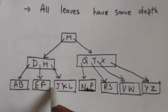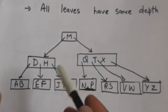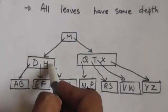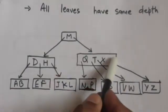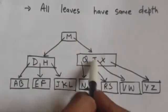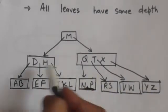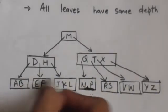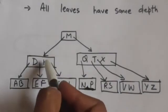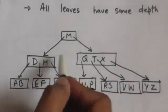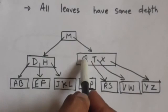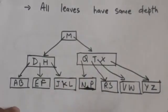Consider this B tree — all leaves have the same depth. This node of the B tree has two keys, so it has three children. And this node of the B tree has three keys, therefore it has four children. You can see that all leaves of this B tree have the same depth, and in any node the keys are stored in increasing order.